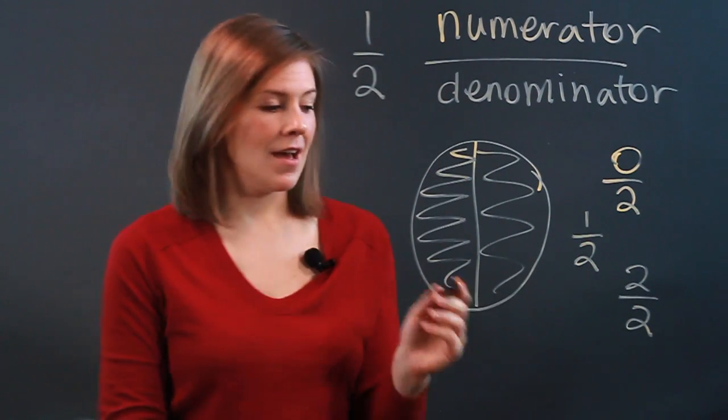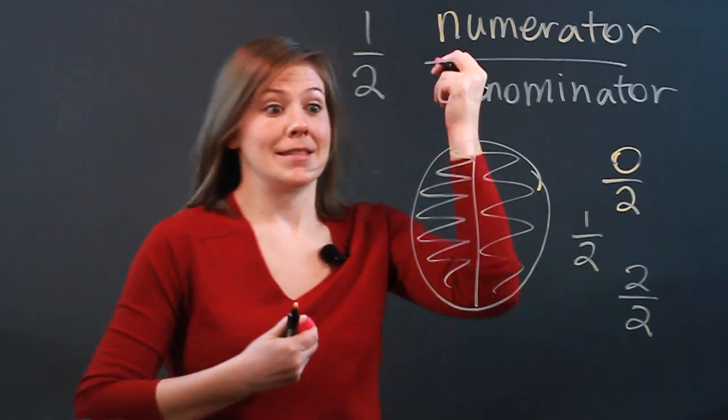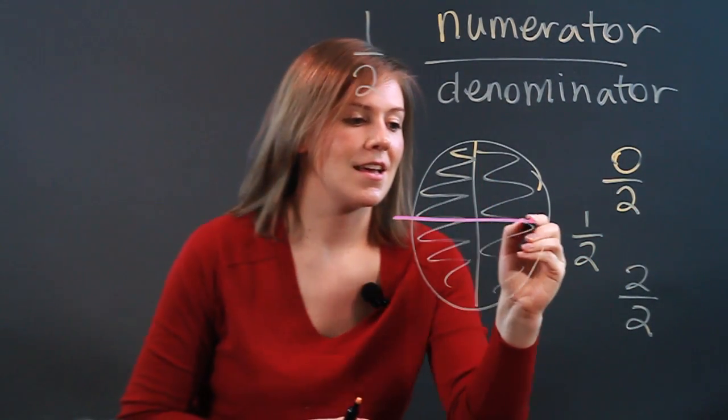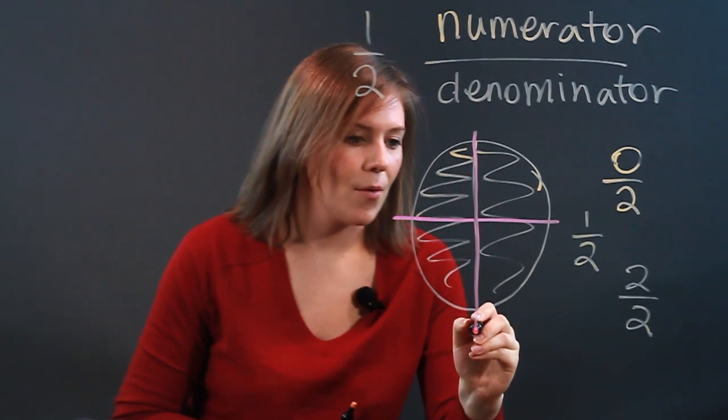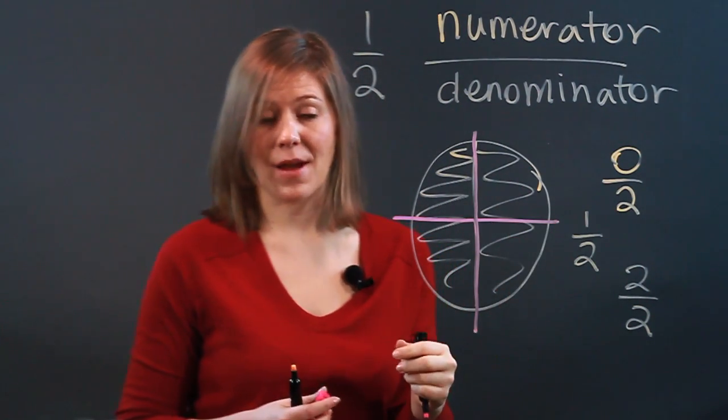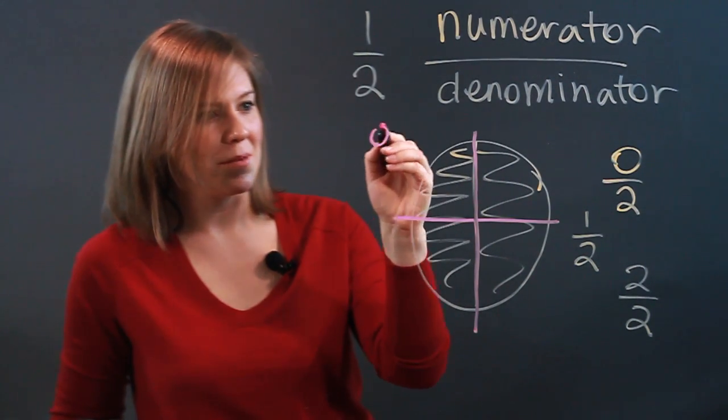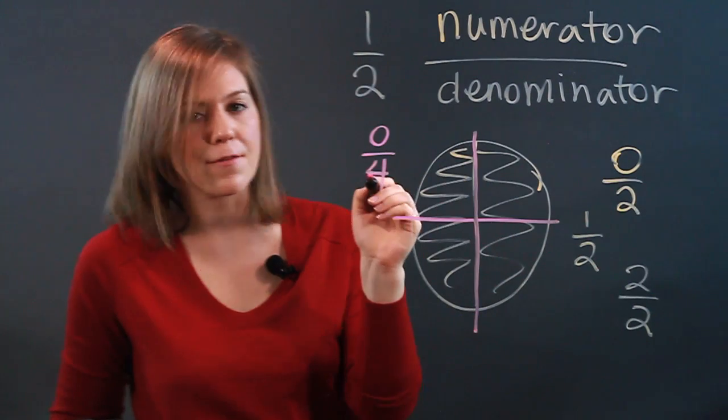Now if I were to come across and split it so that now we have four equal parts, I would need to change my fraction. So here none are colored in pink, so I have zero of the four equal parts.